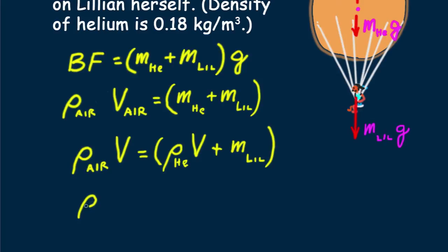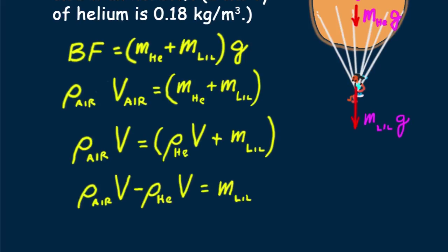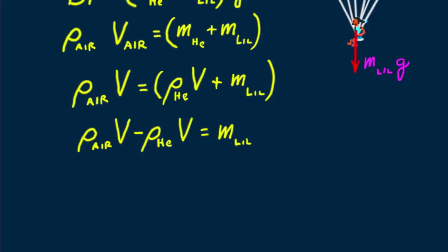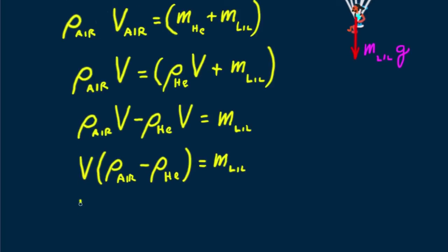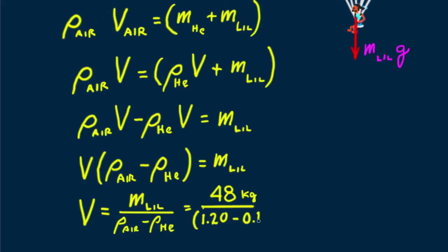Getting our terms for volume on one side, solving for V, and citing the densities of air and helium, problem solved: 47 cubic meters.